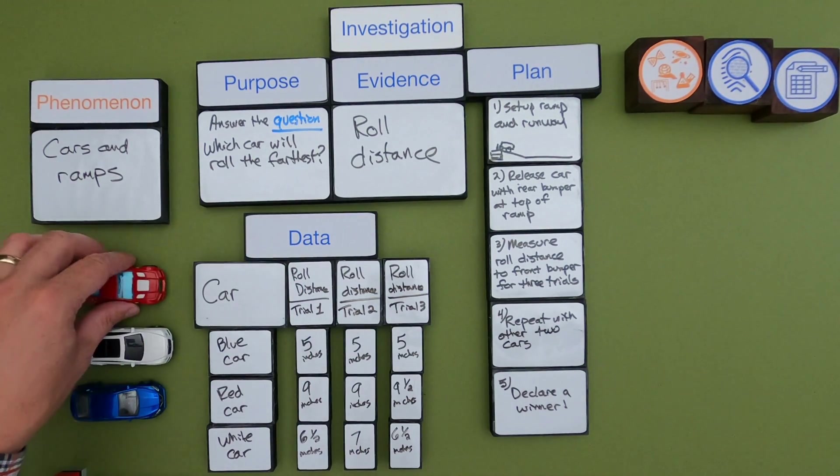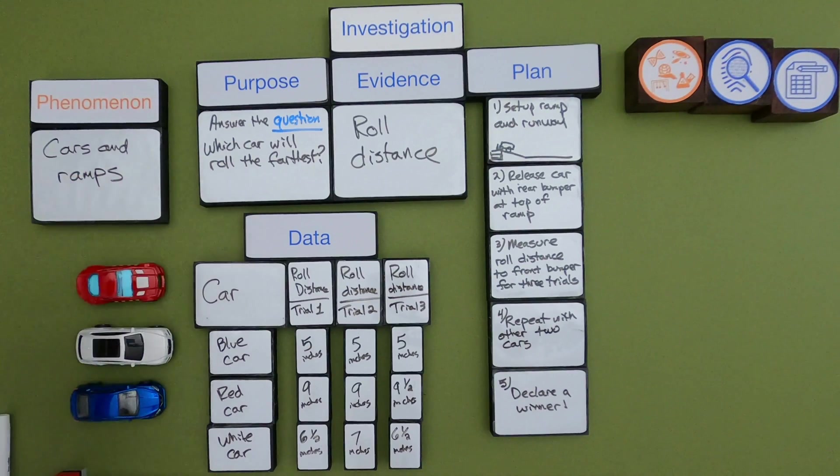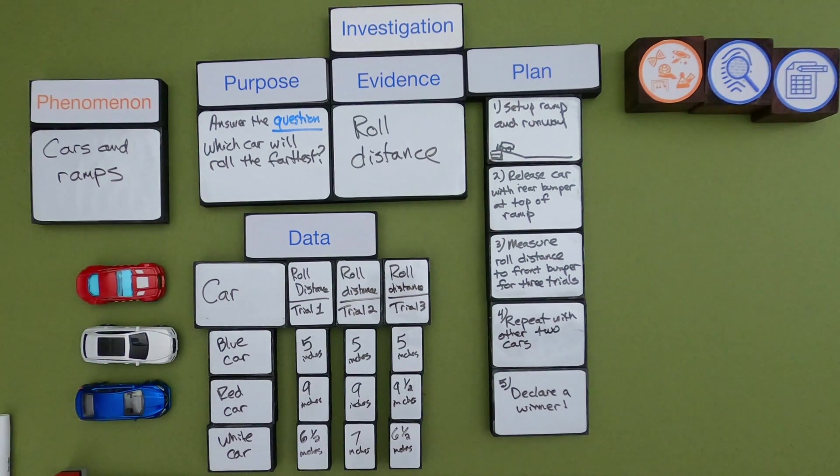In first place would be the red car. It travels the furthest. Next would be the white car and next is going to be the blue car. And so that's how you plan an investigation.